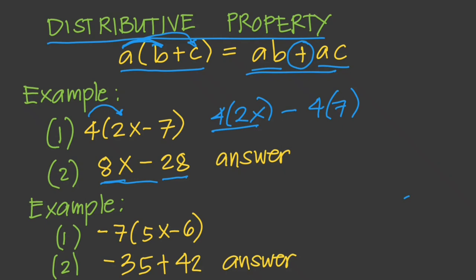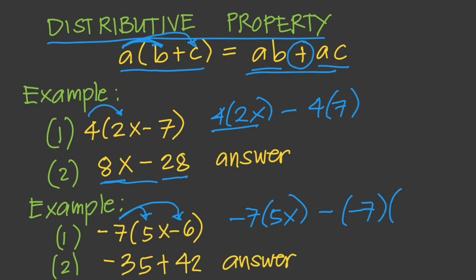Another example: negative 7 times (5x minus 6). We distribute negative 7. Negative 7 times 5x equals negative 35x, and negative 7 times negative 6 equals positive 42. So our answer is negative 35x plus 42.